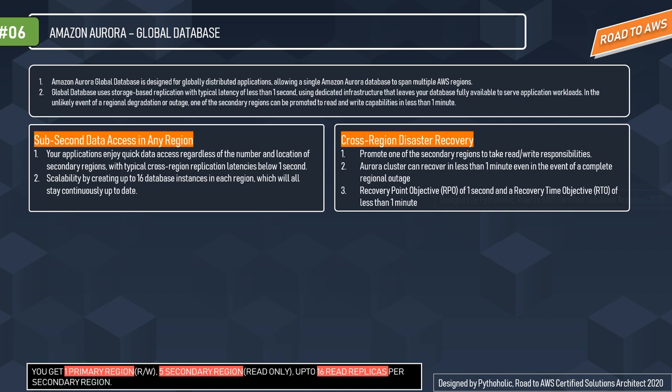RPO — recovery point objective — is the interval of time that might pass during an outage before the quantity of data lost exceeds the threshold set by your organization. For example, if your company says backed-up data should be within the last 10 hours, and your last restore data is from eight hours back, then you're in the safe zone. When it comes to AWS Aurora Global Database, it has an RPO of one second — that's mind-numbing.